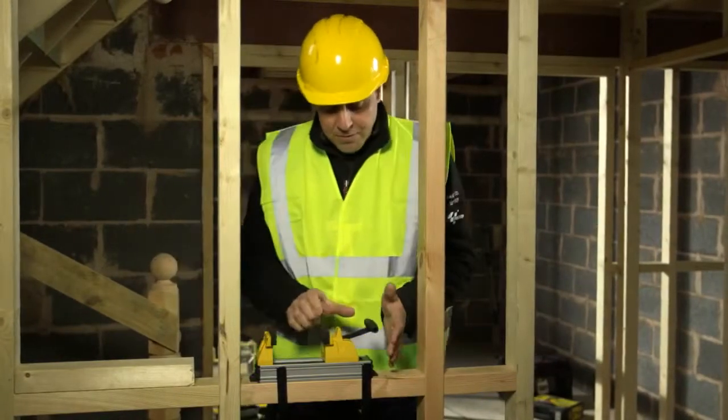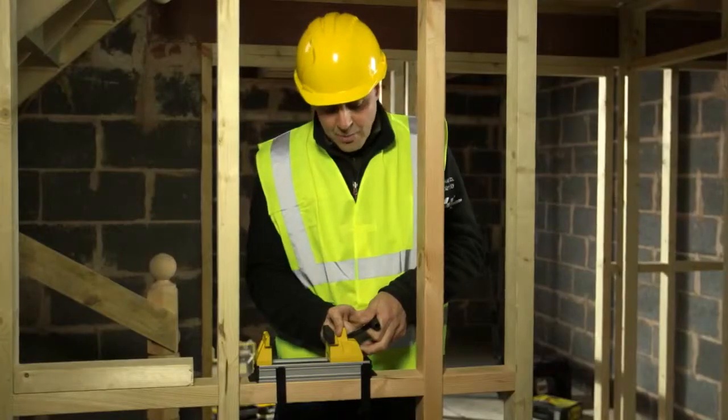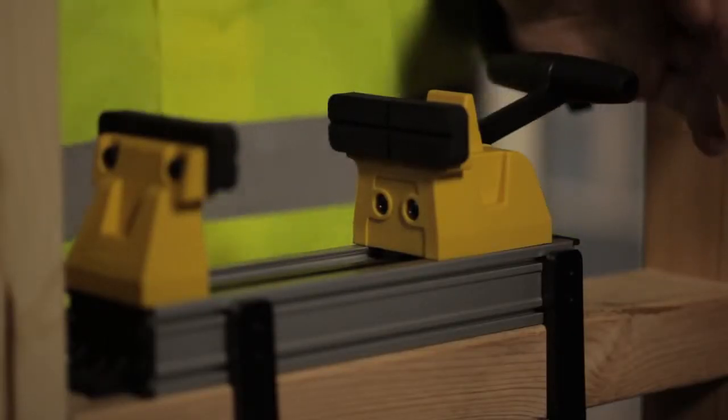The thing itself moves very straightforward. You just pop the lever up and you can slide it backwards and forwards to get it close to where you need to clamp. You've got about a 120mm gap between the jaws.